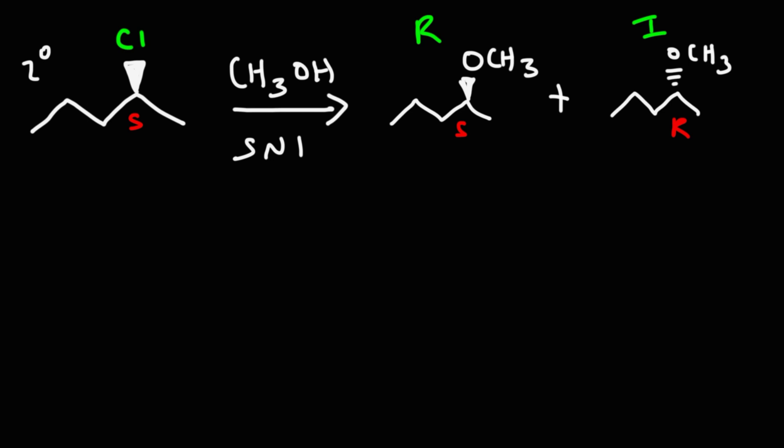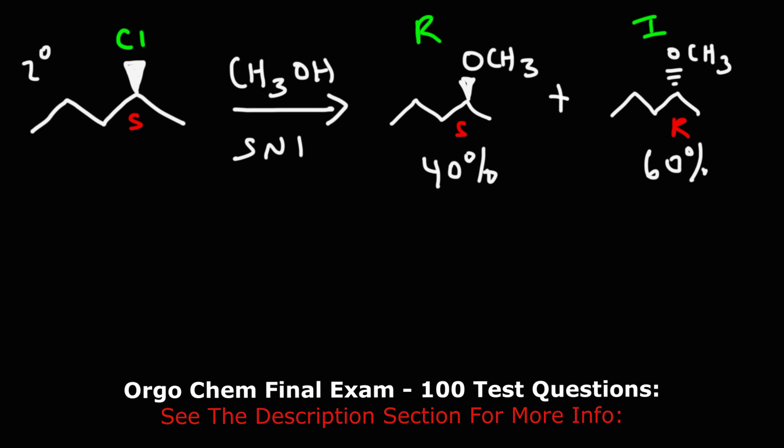Now in an SN1 reaction we typically don't get an equal amount of the retention product and the inverted product. We get an unequal racemic mixture. So the retention product we might get 40% of it, and the inverted product we might get 60%. In some cases it may be 30-70 instead of 40-60. But nevertheless we do observe that it's an unequal racemic mixture. We get more of the inverted product than the retention product. But the question is why?